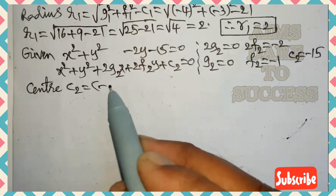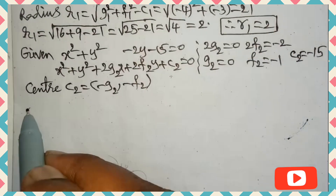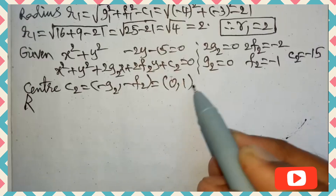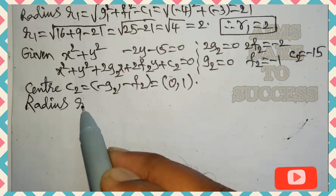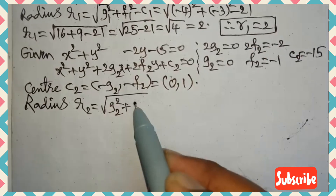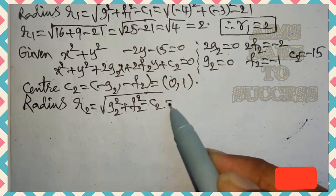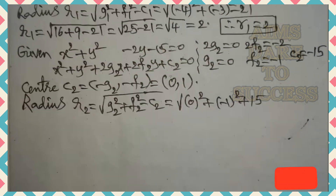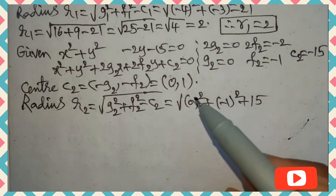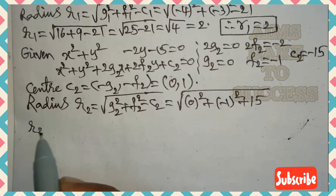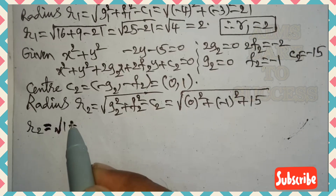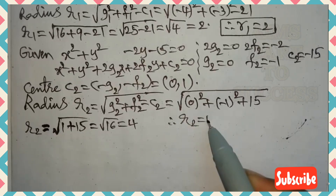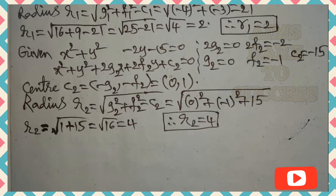The constant term gives c₂ = −15. Center C₂ = (−g₂, −f₂) = (0, 1). Radius r₂ = √(g₂² + f₂² − c₂) = √(0² + (−1)² − (−15)) = √(0 + 1 + 15) = √16 = 4. So radius r₂ = 4.